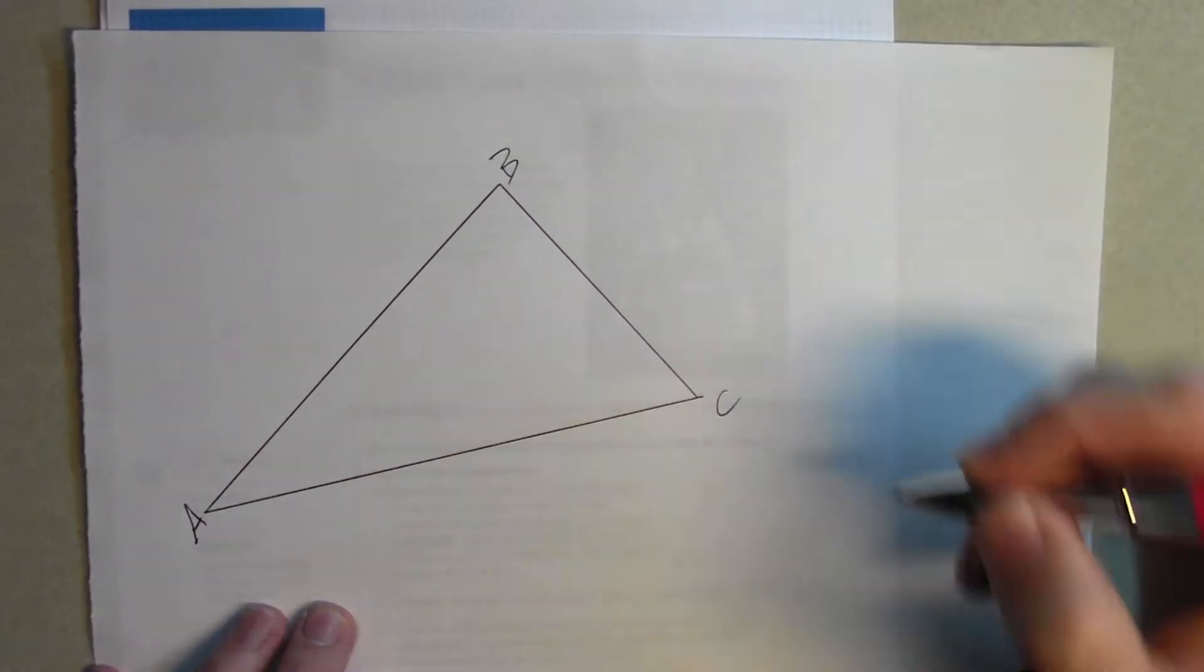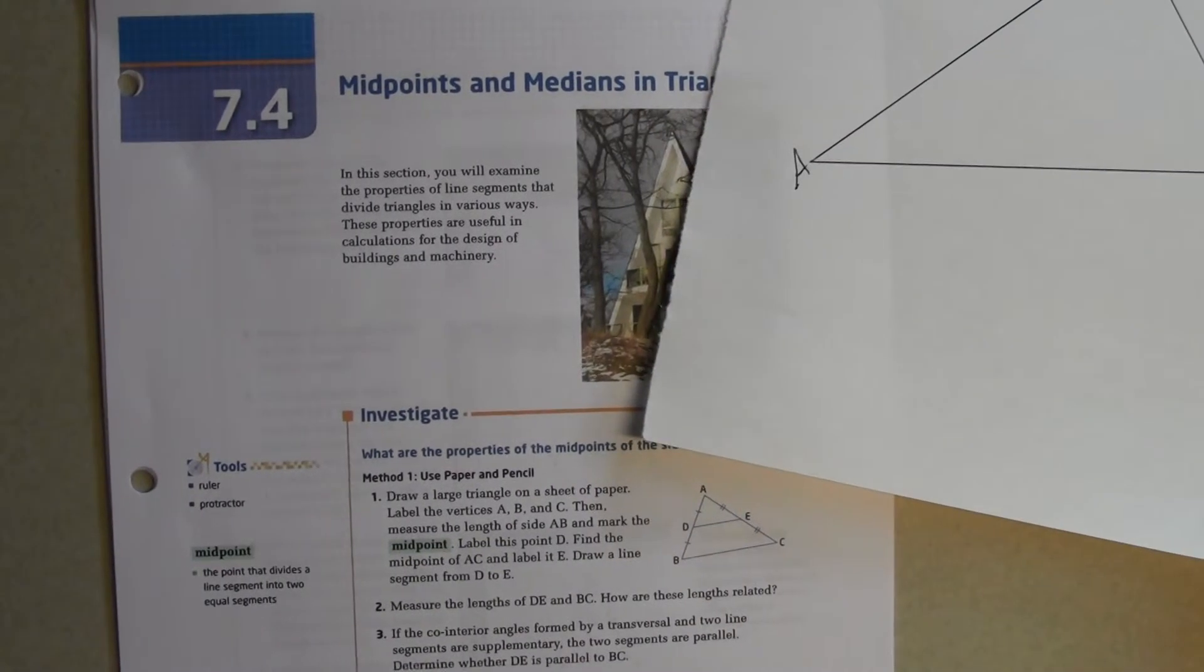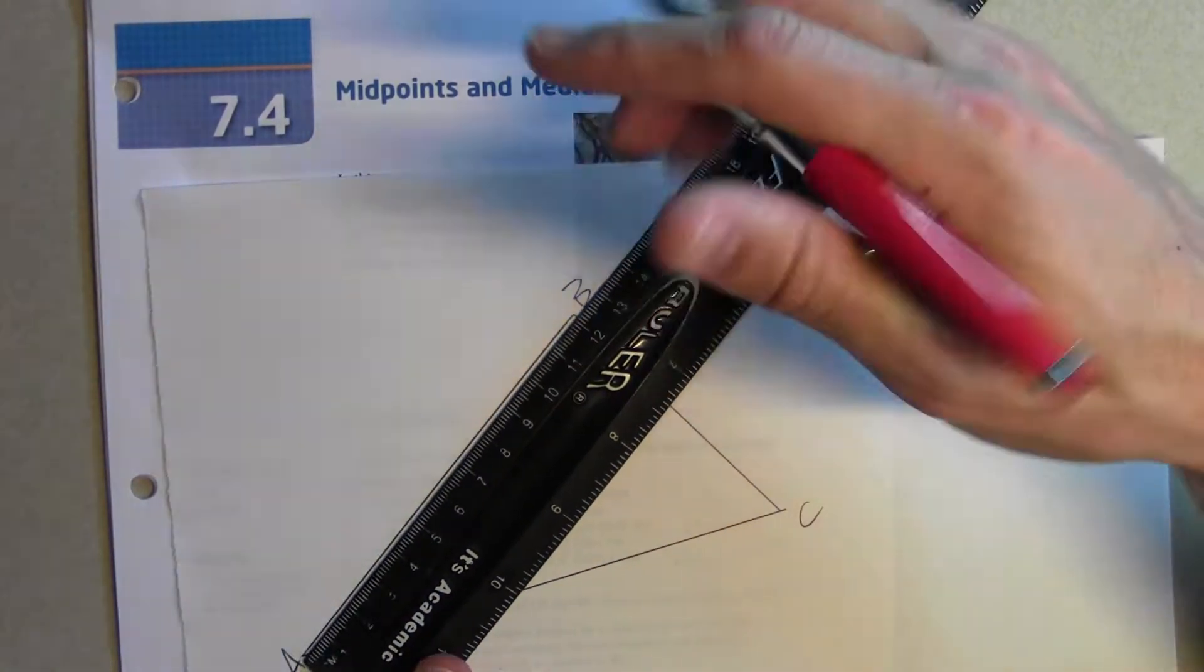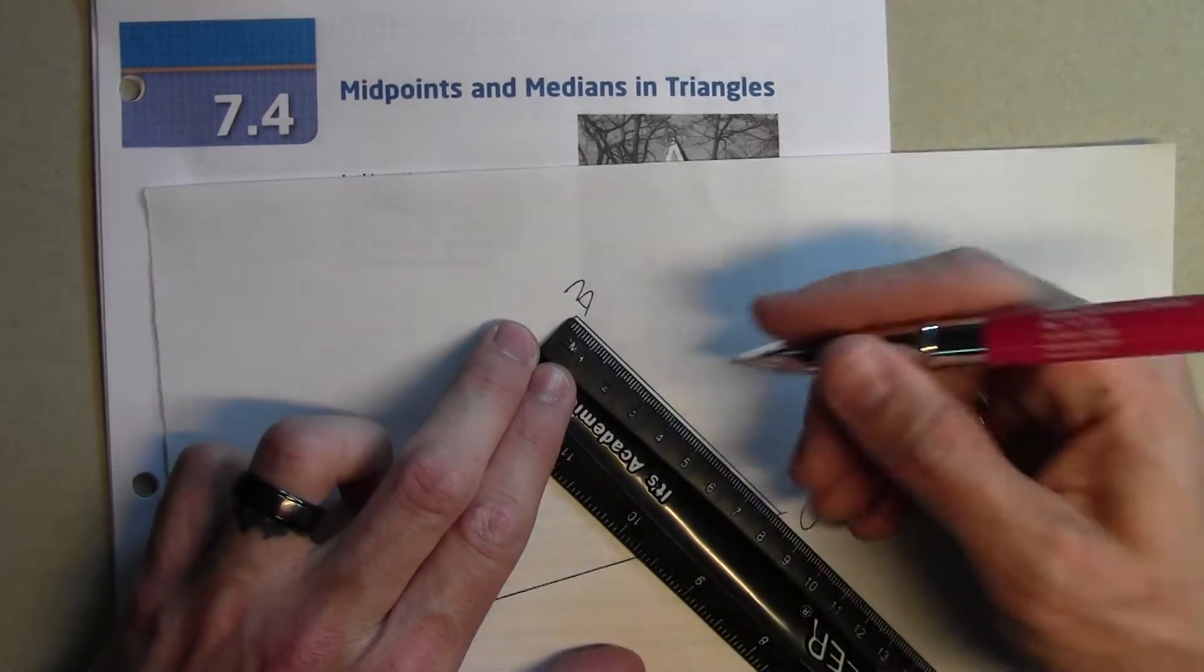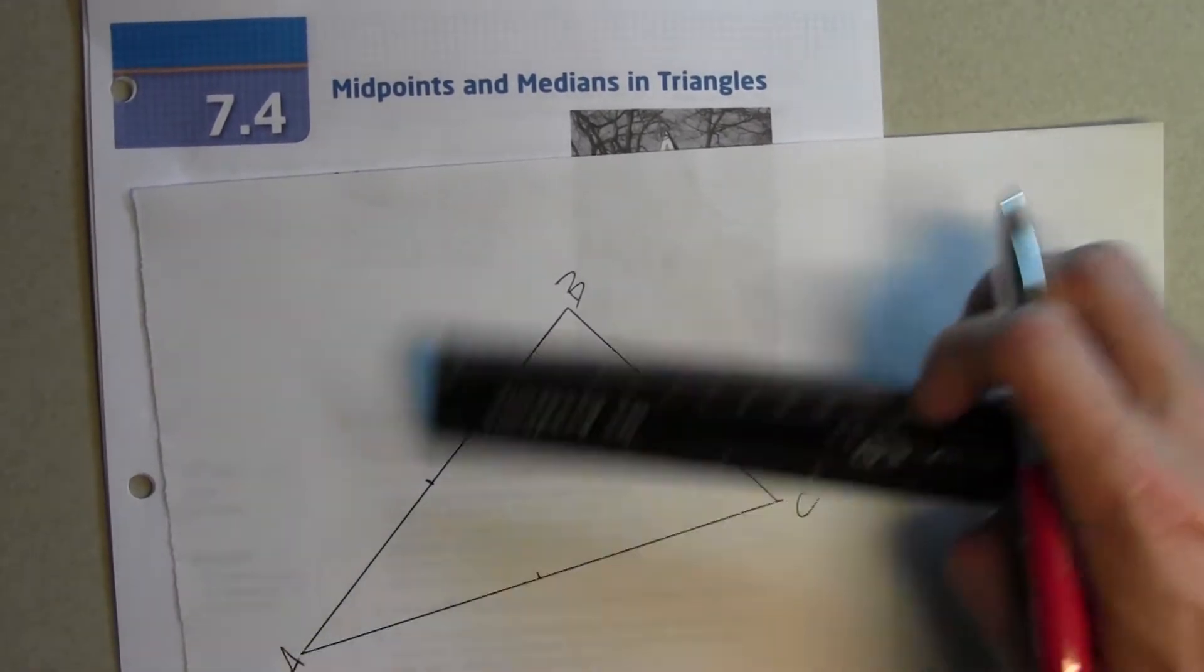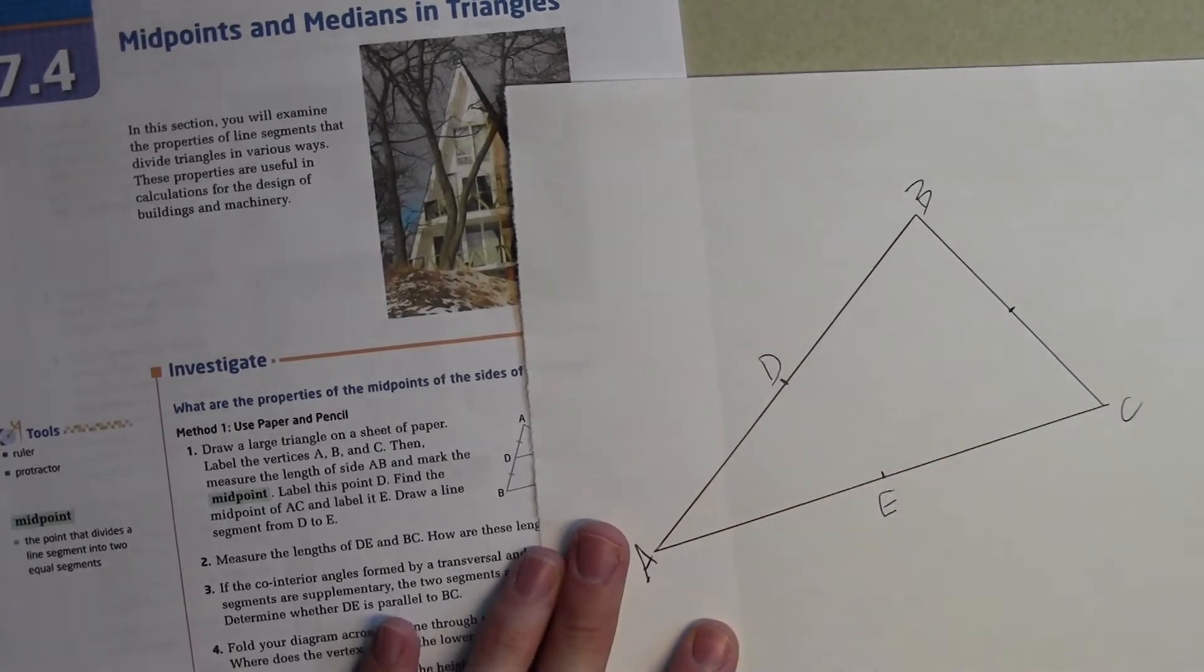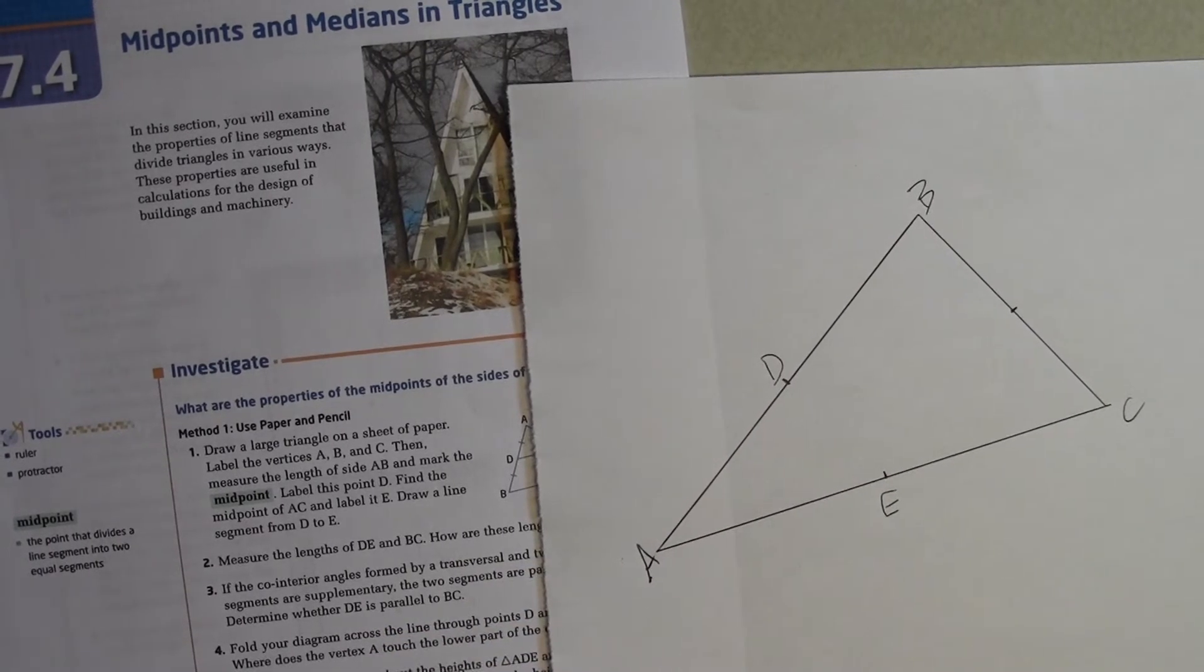There's my triangle. A, B, C. Then it says measure the length of side AB and mark the midpoint. Label this point D, find the midpoint of AC. So we want to find the midpoints of each. AB, that's 12, so my midpoint is 6. 8, my midpoint is 4. 14, midpoint is 7. D, AC, and label it E.